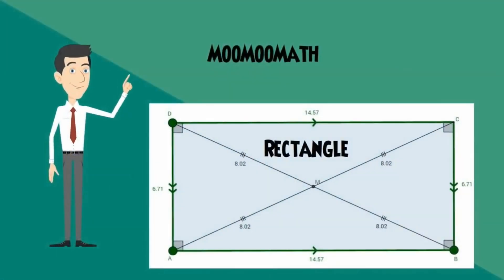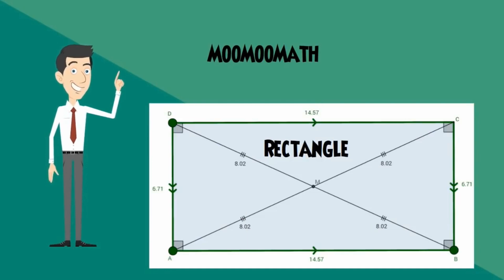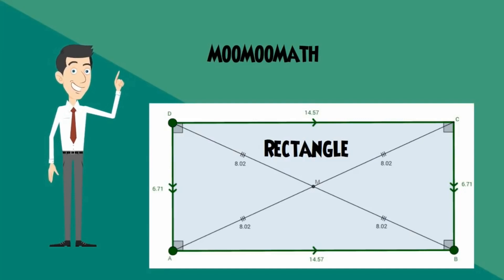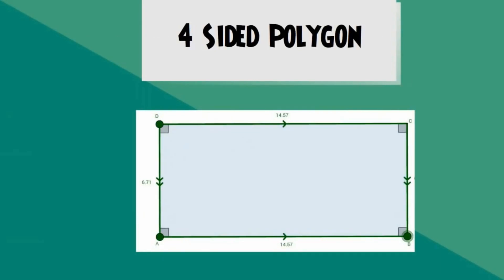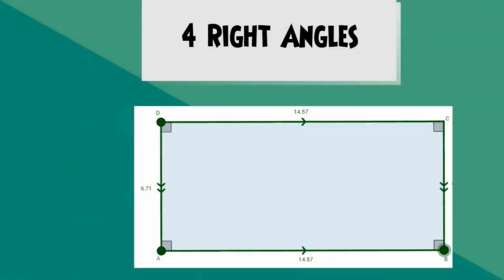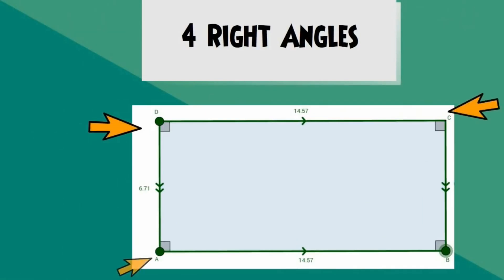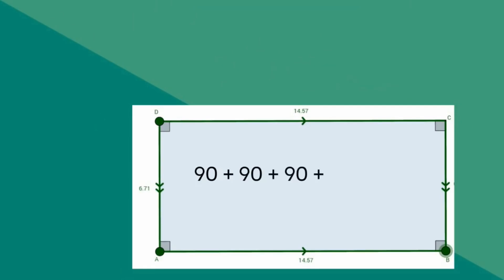Welcome to MooMooMath. In this video I'd like to talk about the properties of a rectangle. A rectangle is part of the quadrilateral family, which means it is a plane shape with four sides. In addition it has several other properties. A rectangle is a four-sided polygon with opposite sides being parallel.